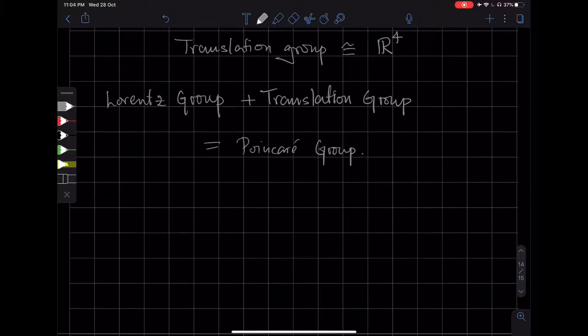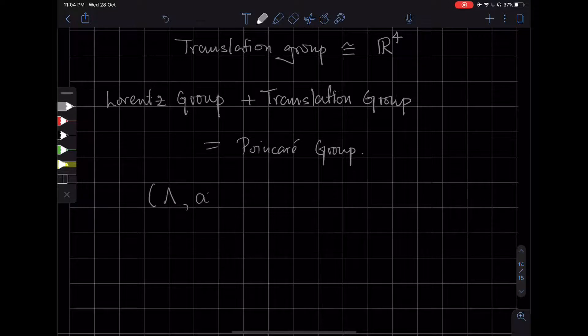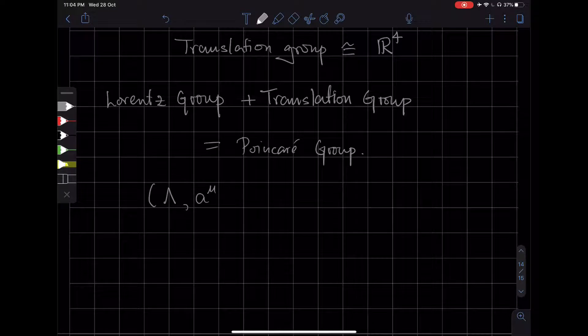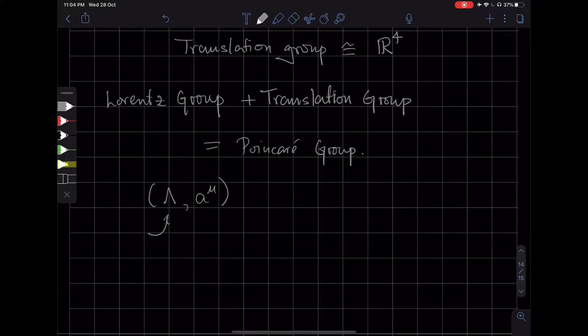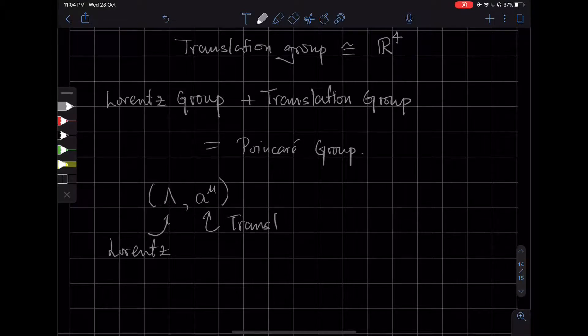The Poincaré group consists of 4 by 4 Lorentz matrices and a 4-tuple which encodes the translation. So this is a Lorentz transformation and this is a translation.